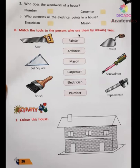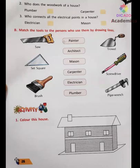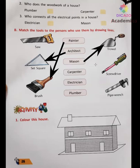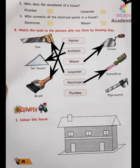Now let's look at the tools these persons use. A painter uses a paint brush — painter ke kaam mein brush aata hai. A carpenter's work involves a saw — carpenter ke kaam mein saw aata hai. An electrician uses a screwdriver — electrician ke kaam mein screw aata hai. And a plumber uses a pipe wrench — plumber ke kaam mein pipe wrench aata hai. So these are the links between the workers and their tools.